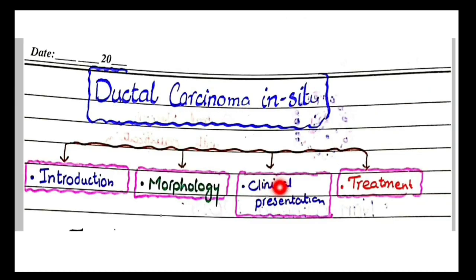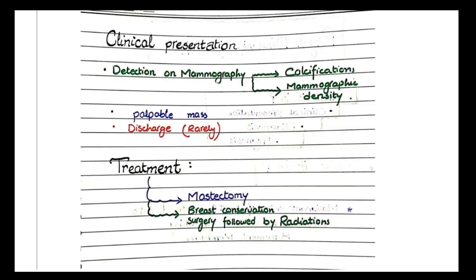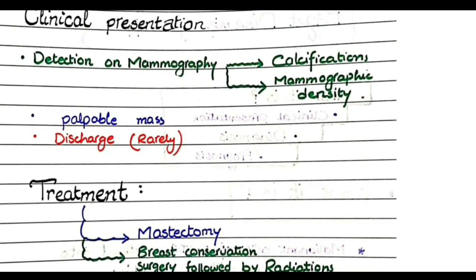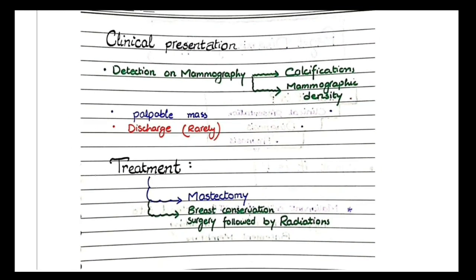Regarding clinical presentation, most ductal carcinoma in situ cases are not diagnosed on clinical examination. Rather, they are first detected on screening tests like mammography and ultrasound, where you will see calcifications or mammographic densities. These findings require further histological workup, as they can represent ductal carcinoma in situ or even invasive breast carcinoma. Some cases may present as a palpable mass or nipple discharge, but detection on mammography as calcifications or densities is the most common presentation.